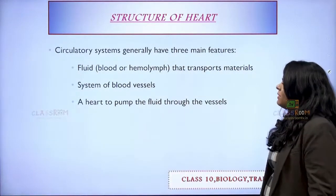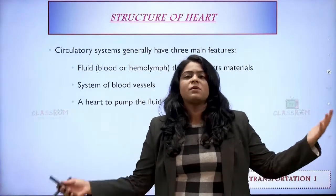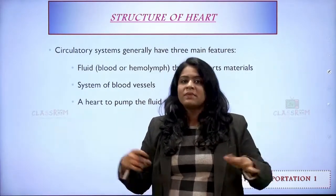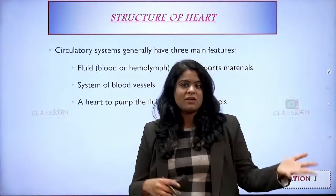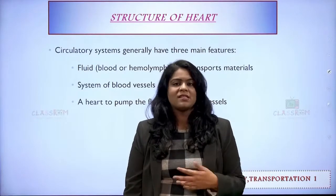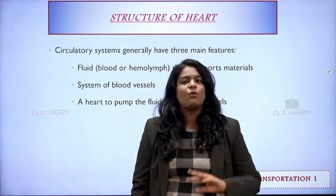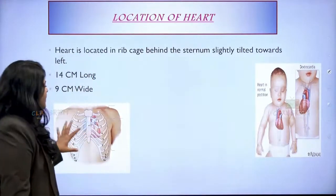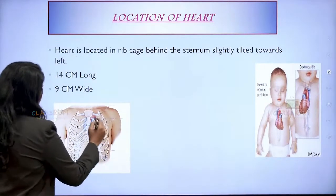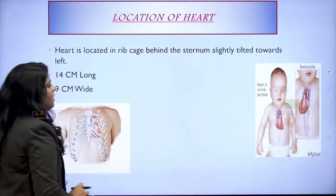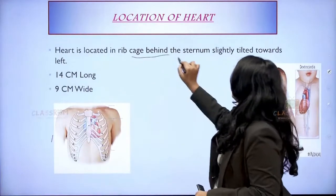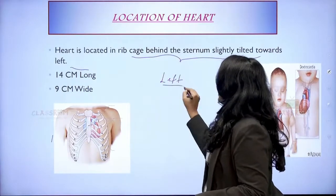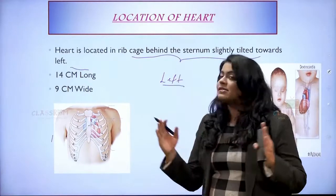Circulatory system generally has three main features. We always think it means only the heart, but circulatory system comprises three things: blood, the vessels — capillaries, arteries and veins — and then the heart. Heart is very important as it's like the pump, but always remember circulatory system comprises three things. Now about the location of the heart: it is located right behind the sternum on the left side. Our heart is always towards the left — it is 14 centimeters long and 9 centimeters wide.